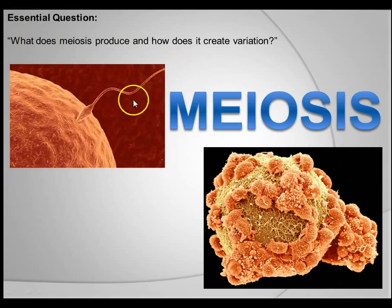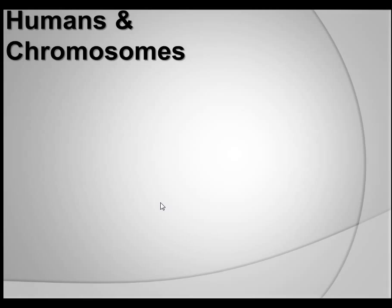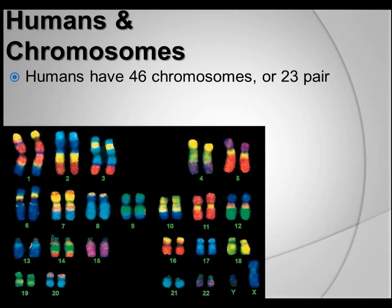In these pictures here, we have a sperm fertilizing an egg, and that there is a human egg. We can't talk about meiosis without talking about human beings and chromosomes. We have 46 chromosomes total, or 23 pairs.